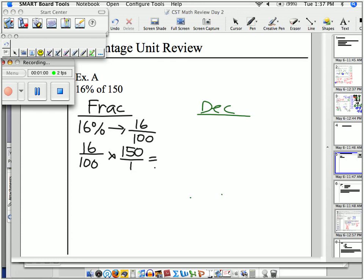I will multiply top times top. That's called evaluating. When I evaluate this top, I get 2,400. Let me double check that. Yeah, you do get 2,400. On the bottom, 100 times 1 is 100.